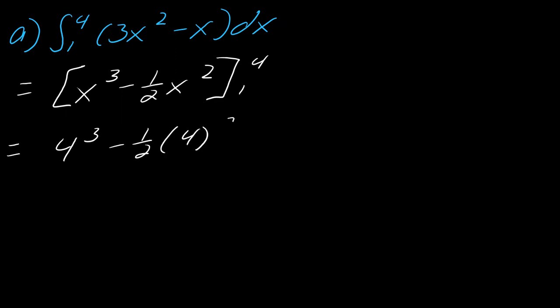So let's see, this times four squared, and then I'm going to subtract off what it would mean to plug in one. So I'll put parentheses around all of this, make this look nice. Okay, minus one half times one squared.